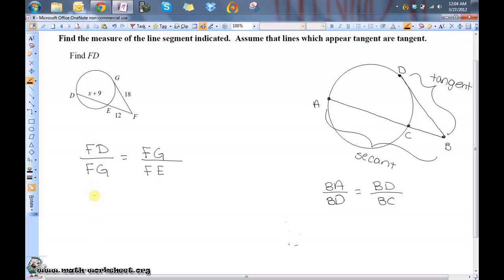So the length of FD is equal to the length of FE plus ED, so that's equal to 12 plus x plus 9. So that's equal to x plus 21.